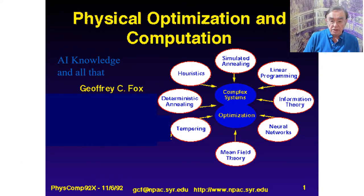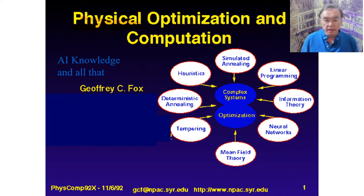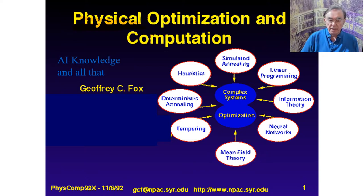Here are some very old slides from 1992 — a talk given at Houston — about optimization, focusing on methods which use some analogy with a different system like a physics system, called physical optimization and physical computation. The word 'physical,' as it meant in the dictionary in the 1990s, meant pertaining to nature — so not just physics, but also chemistry, evolution, and things pertaining to nature.